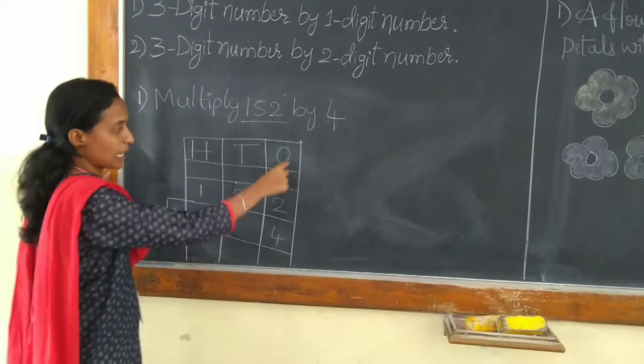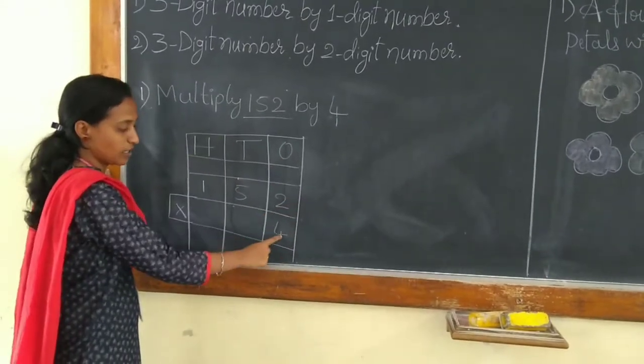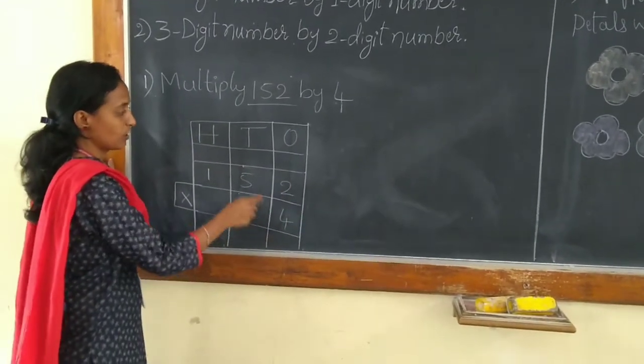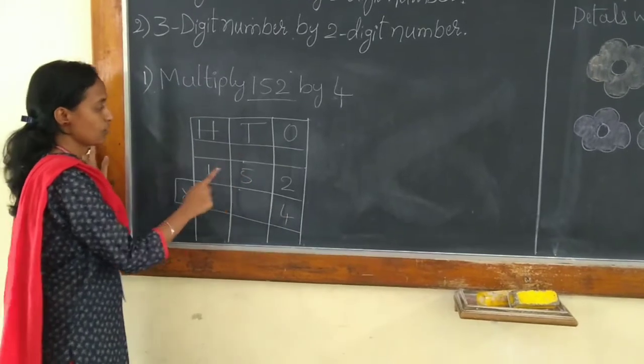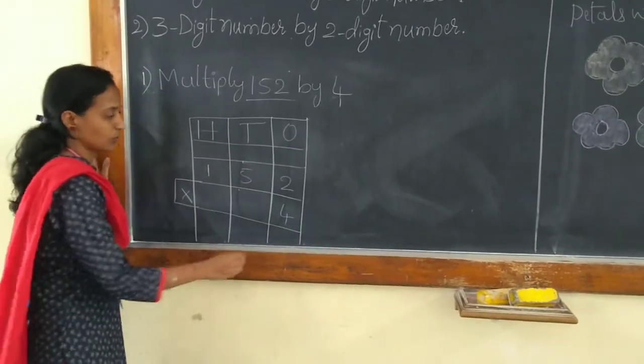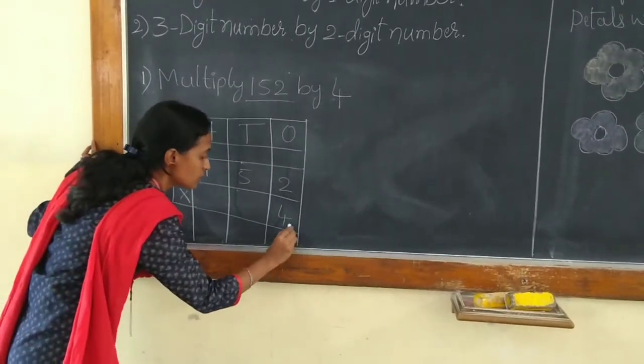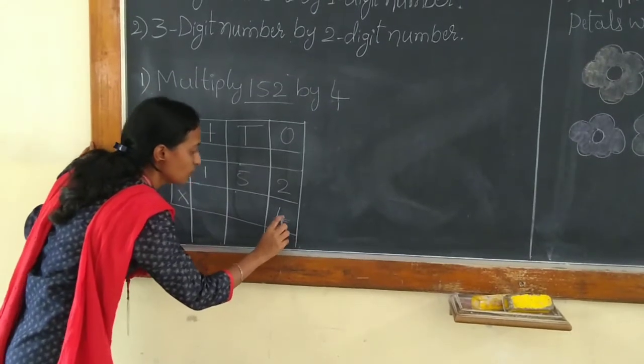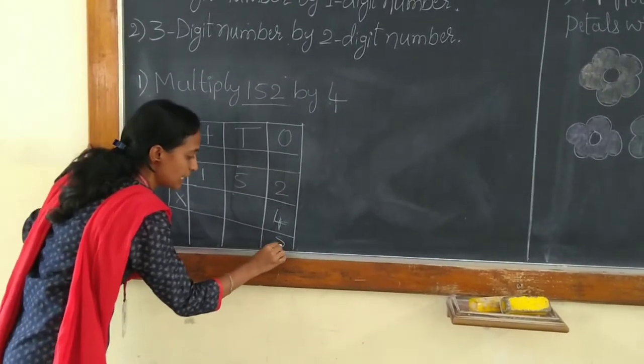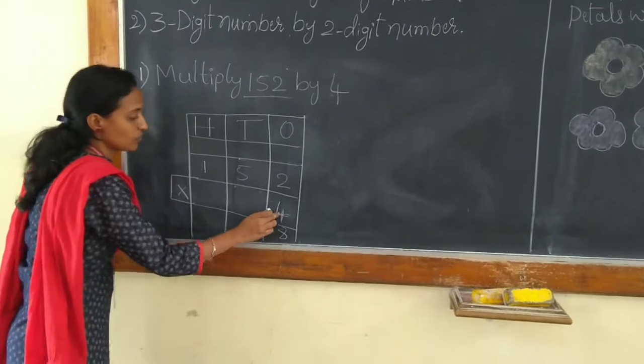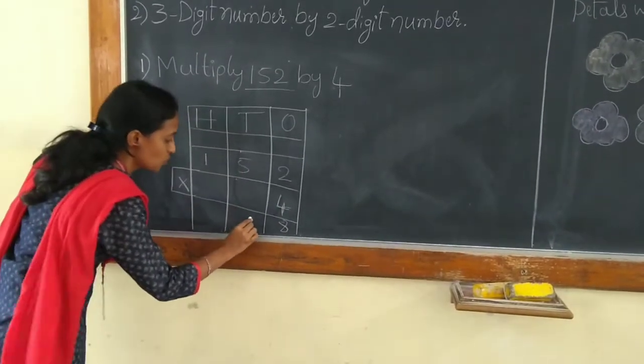First we need to multiply 1's digit by the multiplier 4. Next, 10's by 4, 100's by 4. So, let us multiply 4 times 2 is 8. Next, 4 times 5 is 20.